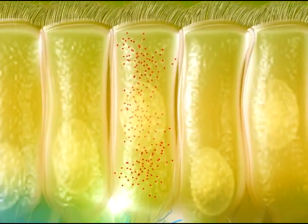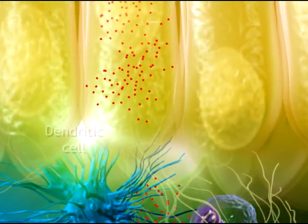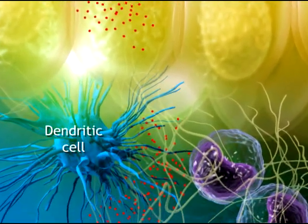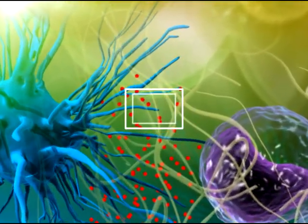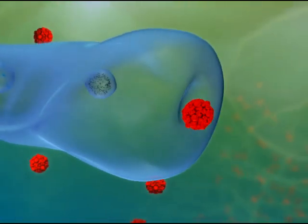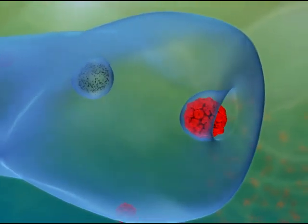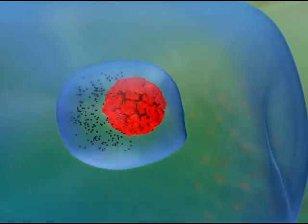In the tissue fluids, cells of the second line of innate defense, such as this dendritic cell, carry out surveillance for anything that appears foreign. Dendritic cells engulf the rhinovirus within an endosome. The endosome fuses with a lysosome, whose enzymes digest the rhinovirus.